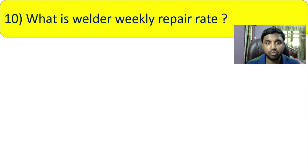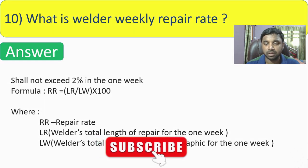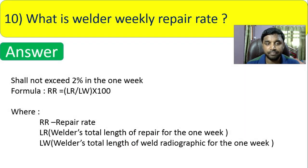Question 10: what is the welder weekly repair rate? It shall not exceed 2% in one week. The formula is: RR = (LR ÷ LW) × 100, where RR is repair rate, LR is the welder's total length of repair for one week, and LW is the welder's total length of weld radiographed for one week. You must remember this formula and answer.